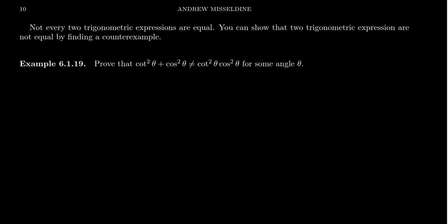So how do you show that two expressions are not equal to each other? We actually have to provide a counterexample. Because saying that two functions are not equal doesn't mean they never agree on angles — it just means they don't always agree; there is some angle they disagree on. So let's show that cotangent squared theta plus cosine squared theta is not equal to cotangent squared theta times cosine squared theta.